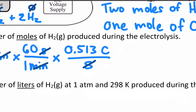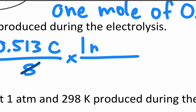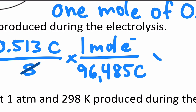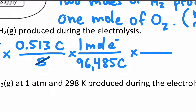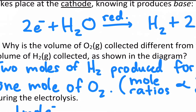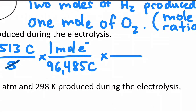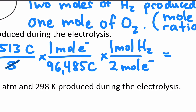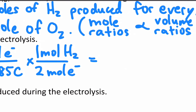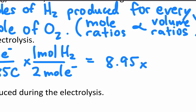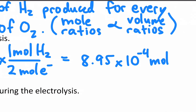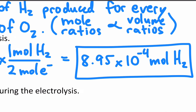To get from coulombs to moles, we use Faraday's constant: one mole of electrons per 96,485 coulombs of charge. Now we're in moles of electrons. Looking at the half-reaction, for every two electrons we get one H₂, so one mole of H₂ for every two moles of electrons. Plugging in the math gives 8.95 × 10⁻⁴ moles of H₂. We successfully converted time into matter.